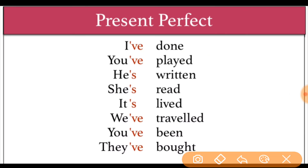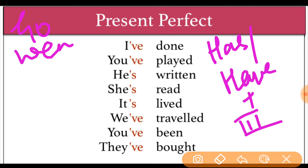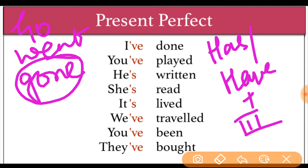So let us discuss present perfect tense. First of all, I want to tell you the rule: it is has or have plus the third form of the verb. For example, the verb 'go' — its second form is 'went' and its third form is 'gone.' Now the question is: where do we use 'has' and where do we use 'have'?